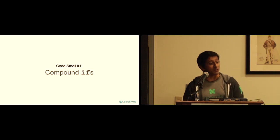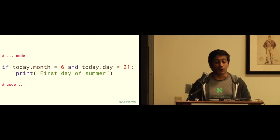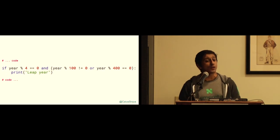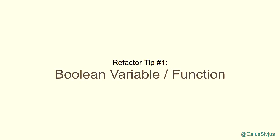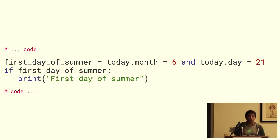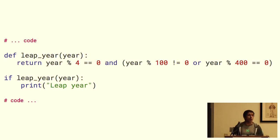Let's take a deeper look at the compound if statement — the first code smell we're going to talk about. If we have one check in our code, it's pretty easy to follow. But if we have a compound if statement, things become a little bit harder to parse, and the more complexity we have in our conditionals, the harder our program is to understand. One suggestion: refactor your conditionals into a Boolean variable or a Boolean function with a descriptive name, and then use that variable inside your if block.